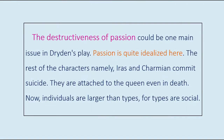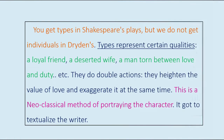The destructiveness of passion could be one main issue in Dryden's play. Passion is quite idealized here. The rest of the characters, namely Iras and Charmian, commit suicide — they are attached to the queen even in death. Individuals are larger than types, for types are social. You get types in Shakespeare's plays, but we do not get individuals in Dryden's.